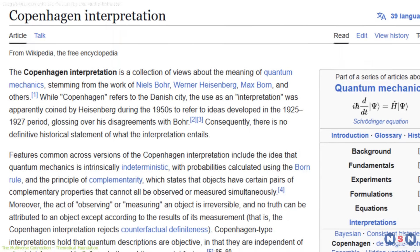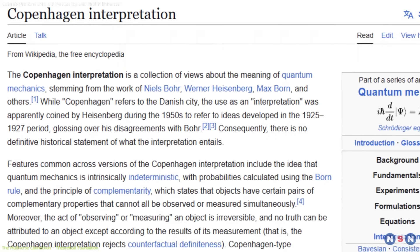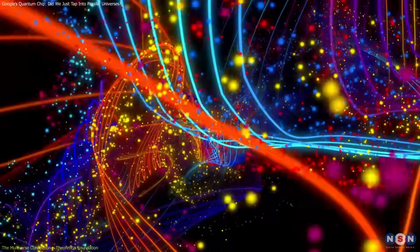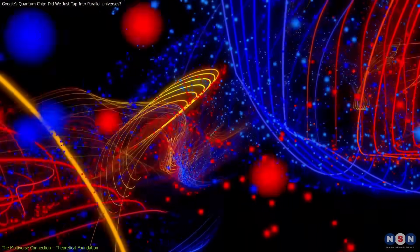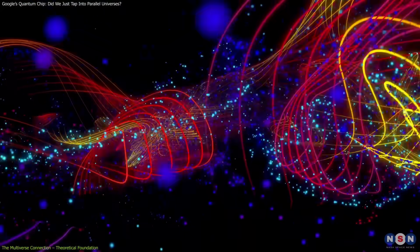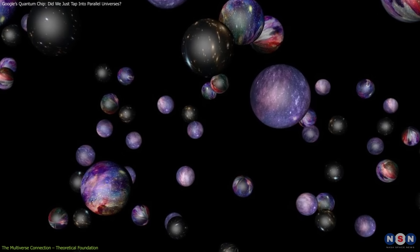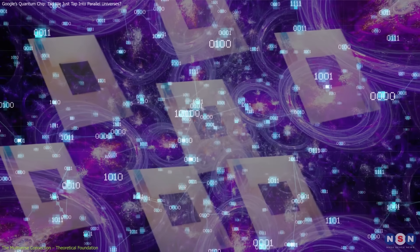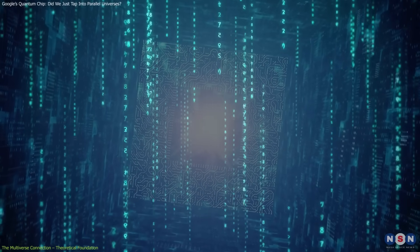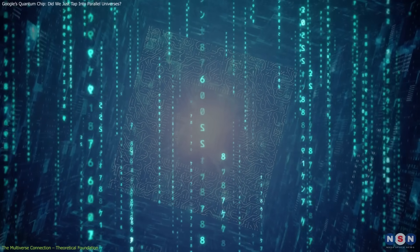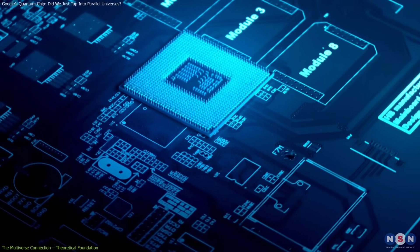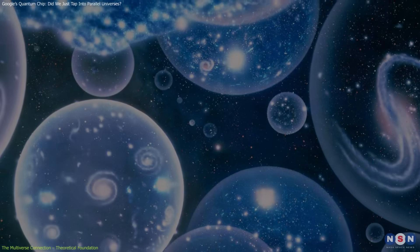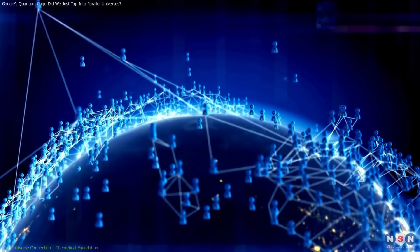The Copenhagen Interpretation, which is the most widely accepted view, argues that quantum states are just probabilities. When you measure a system, the wave function collapses into one state. No need for parallel universes. So, are quantum computers like Willow harnessing the power of the multiverse, or are they just really good at manipulating probabilities? We don't know for sure, but the possibility that quantum computers could offer the first practical evidence of a multiverse is enough to keep the scientific community buzzing.